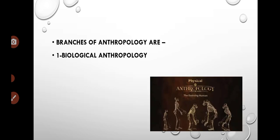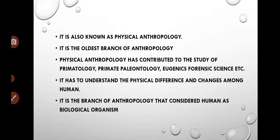Branches of anthropology: there are four branches. The first is biological anthropology, also known as physical anthropology. It is the oldest branch of anthropology.